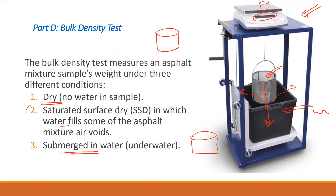The third mass reading is the saturated surface dry condition weight. We take the sample out, wipe the surface, but the water is still inside the voids. We wipe the surface and take this mass reading as the saturated SSD mass.